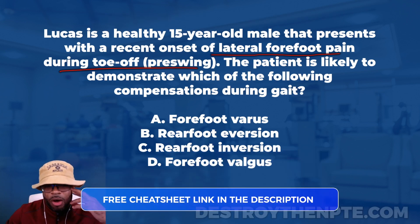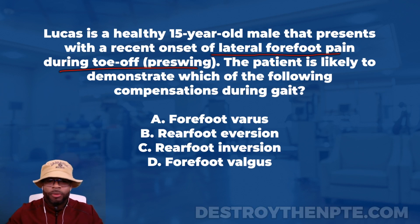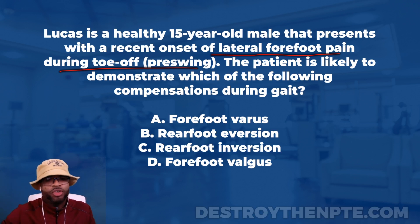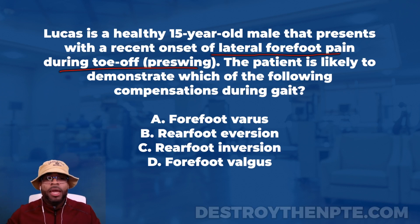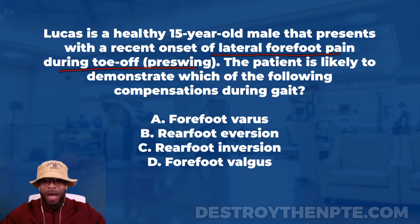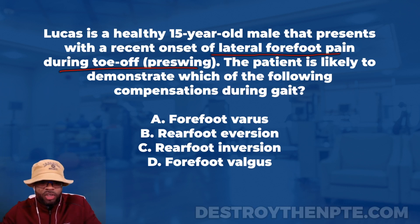What should be happening during toe-off? The name gives it away — this is where we get propulsion, lifting the foot off the ground, progressing into swing phase. Think about how pressure moves from the heel strike forward into pre-swing. The pressure curls around the lateral side of the foot and goes toward the big toe — then we push off. So if pressure should be around the big toe normally, why would the patient be having lateral forefoot pain during this phase? They must be putting excessive stress out there.